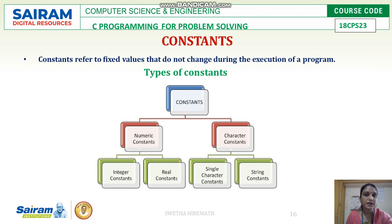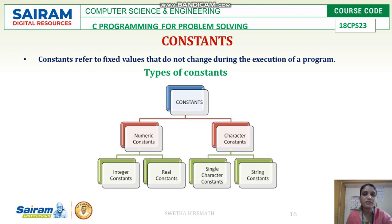What are the different types of constants? Based on what type of value a constant holds, we have different types. There are numeric constants and character constants. If it holds a numeric value, it is called a numeric constant. If it holds a character value, it is called a character constant.